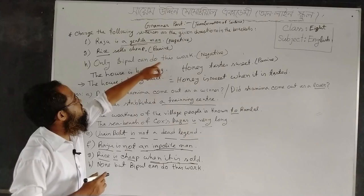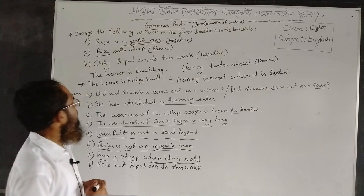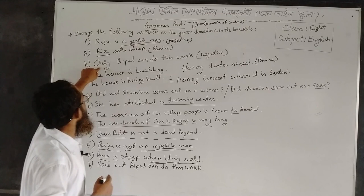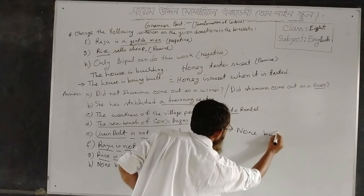The last sentence: Only Bipul can do this work. Negative is in the bracket — you have to make it a negative one. You know, if there is the word 'only' in a sentence while you are changing it to negative, then you have three options: 'none but', 'nothing but', or 'not more than'.